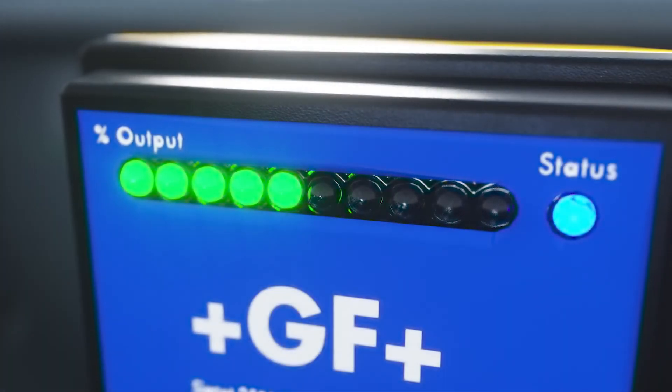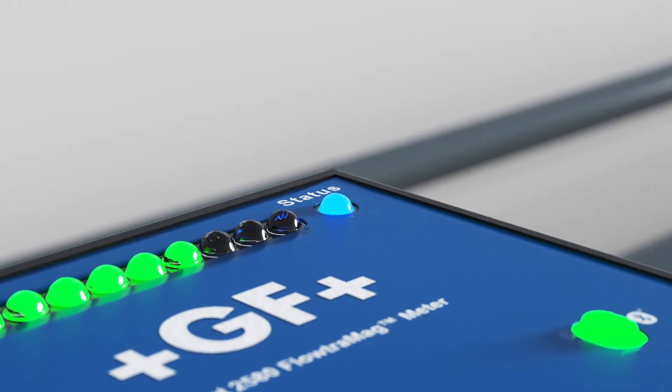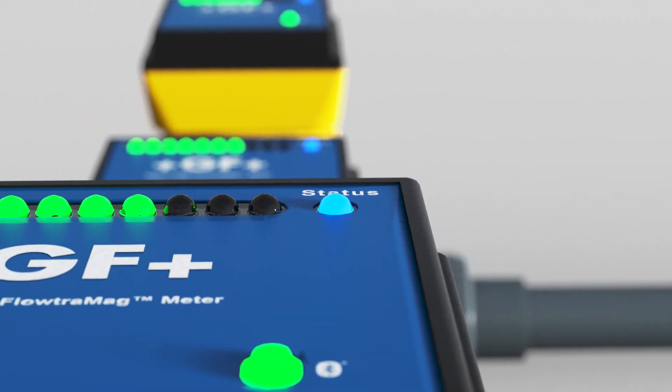Visual LED indicators make sensor status clear and easy to read. The indicators show at-a-glance system status including normal operation, zero flow, and partially empty pipe detection.